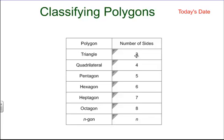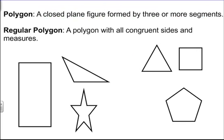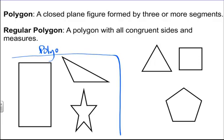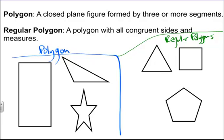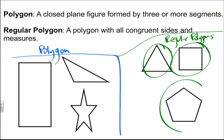We have a couple definitions here. First, a polygon is a closed plane figure formed by three or more segments. A regular polygon is a polygon with all congruent sides and measures — like an equilateral triangle, a square, or a regular pentagon. You don't have to draw these pictures; just write down the definitions.